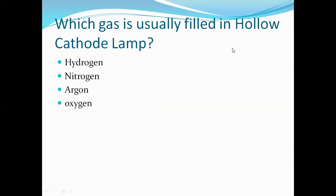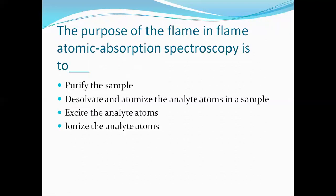Which gas is usually filled in the hollow cathode lamp? The hollow cathode lamp consists of an inert gas. Among the options, only argon is an inert gas, so the correct answer is argon — usually argon inert gas is filled in the hollow cathode lamp to generate radiation. What is the purpose of the flame in AAS? The purpose is to vaporize and atomize the analyte sample in the flame by its heating temperature. So the correct answer is the second option: dissolve and atomize the analyte atoms in the flame.